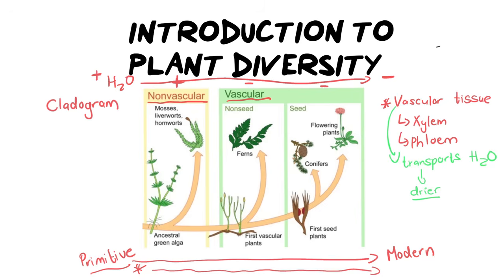The next thing we look at when we classify plants is whether they have a cuticle. The cuticle is a waxy layer on the outside of leaves used for waterproofing. If you live in drier places, you probably also have a cuticle. Generally, if you have vascular tissue, you will also have a cuticle.